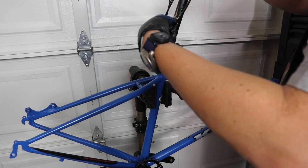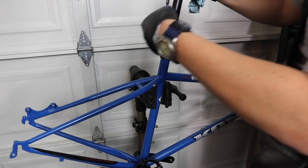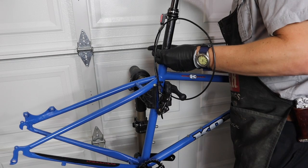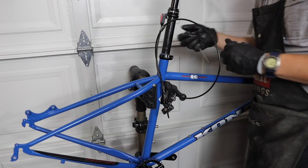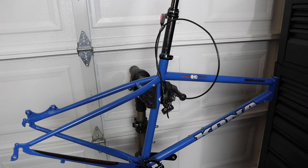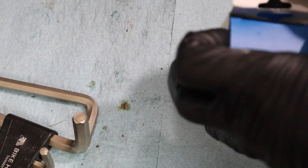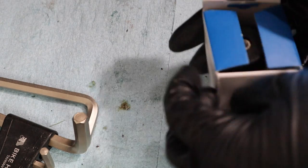A dropper seat post, because that's what you do now. It was actually kind of hard to find one that was the right size for this frame. They don't make frame tubing this small very often anymore.